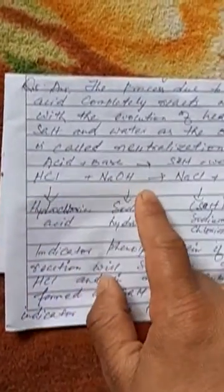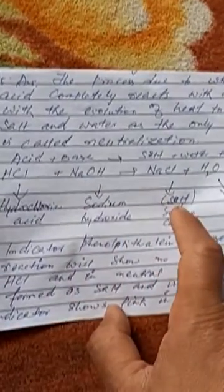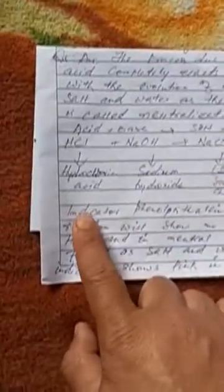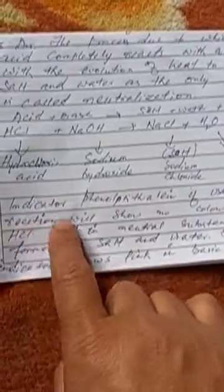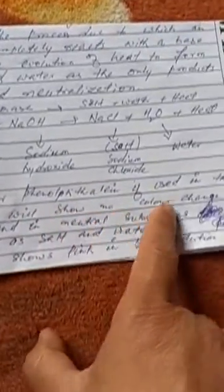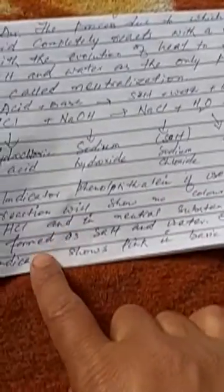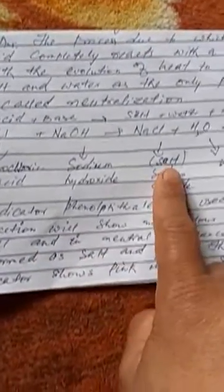HCl is hydrochloric acid and NaOH is sodium hydroxide. HCl plus NaOH gives NaCl, which is sodium chloride (salt), plus H2O (water), plus heat. The indicator phenolphthalein, if used in the reaction, will show no color change in the neutral substance formed as salt and water.